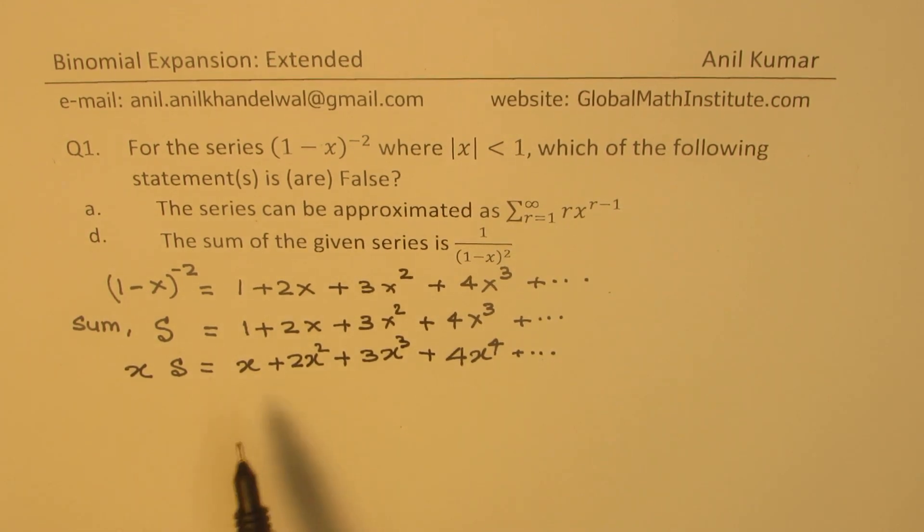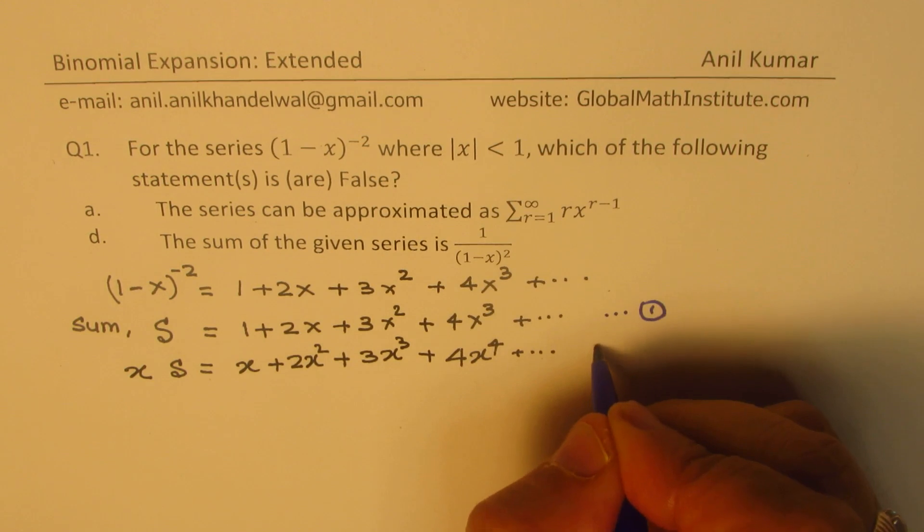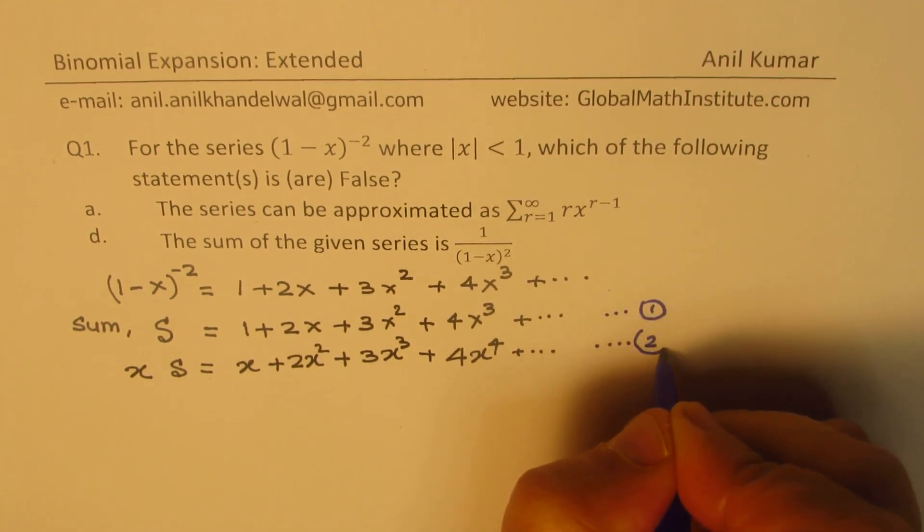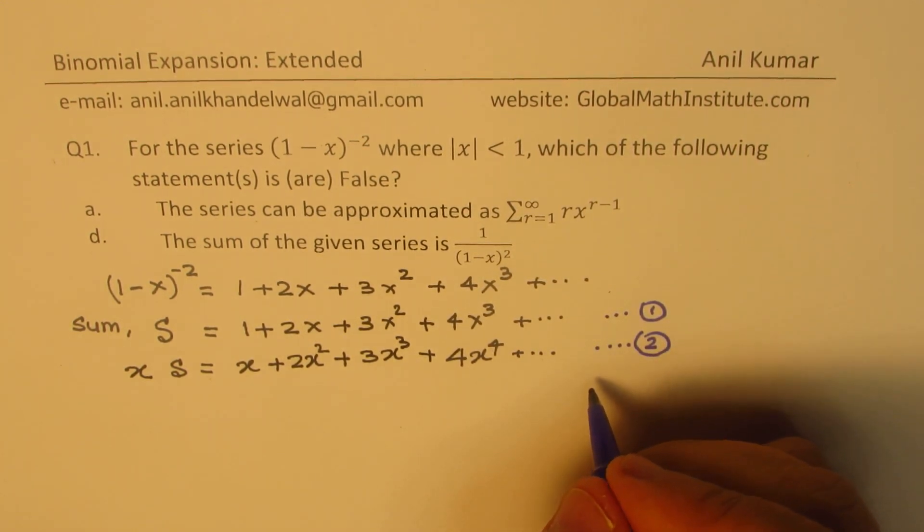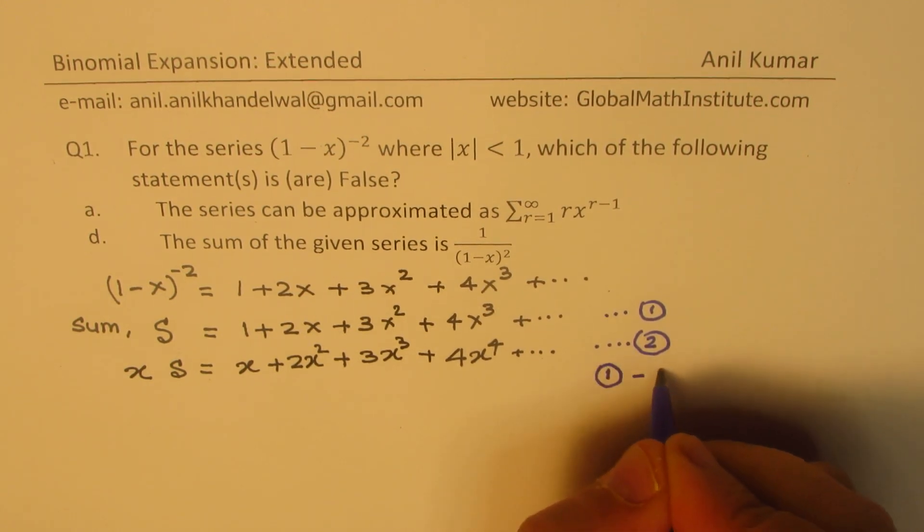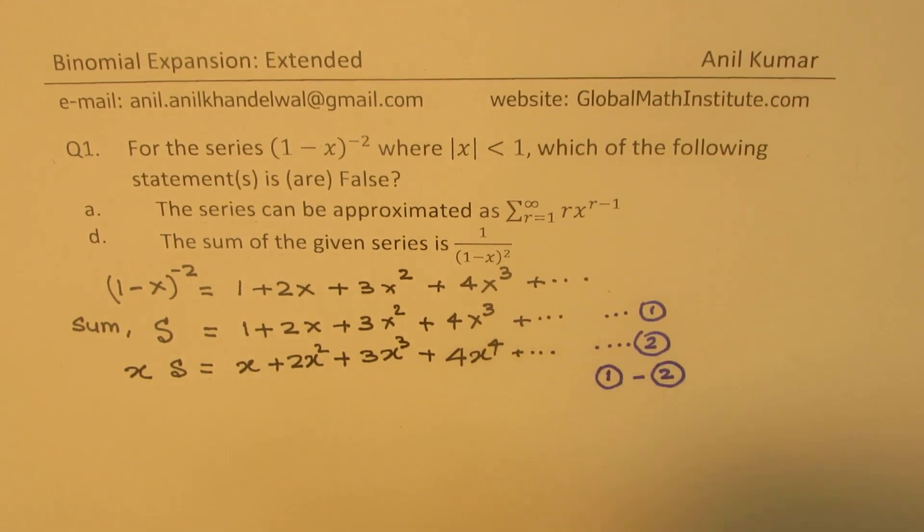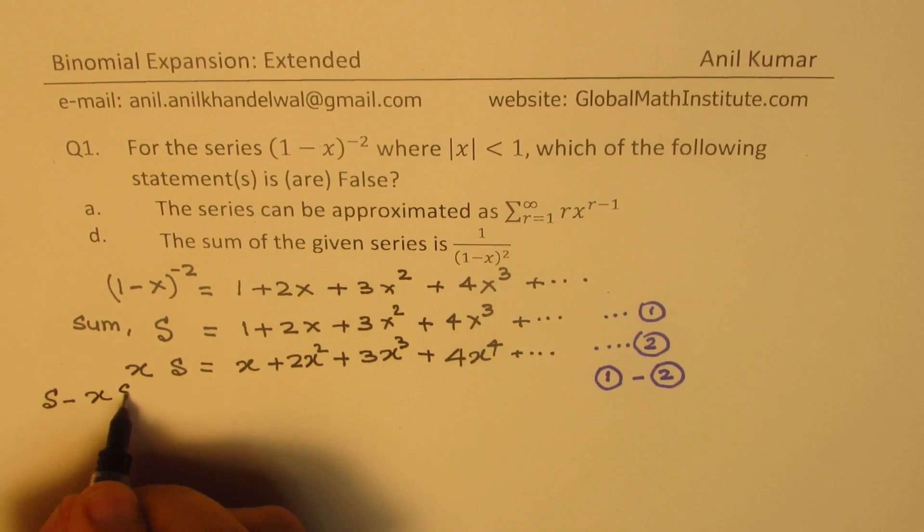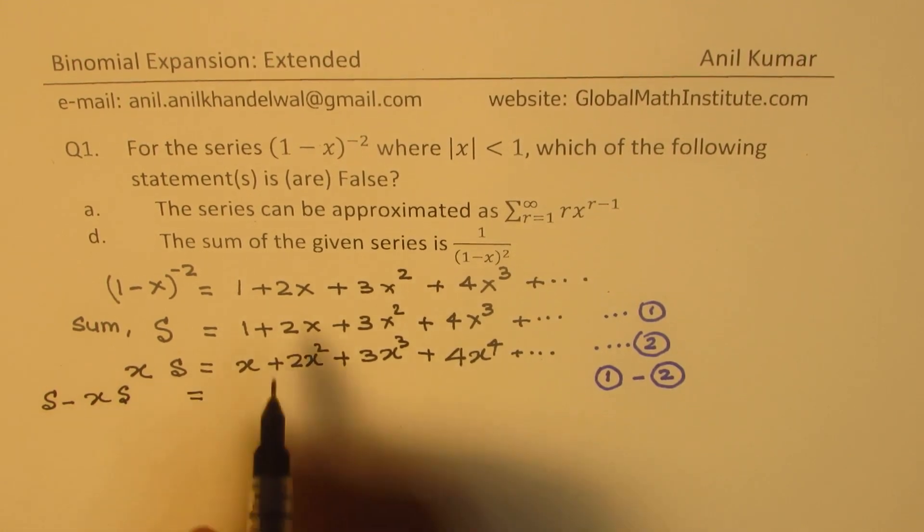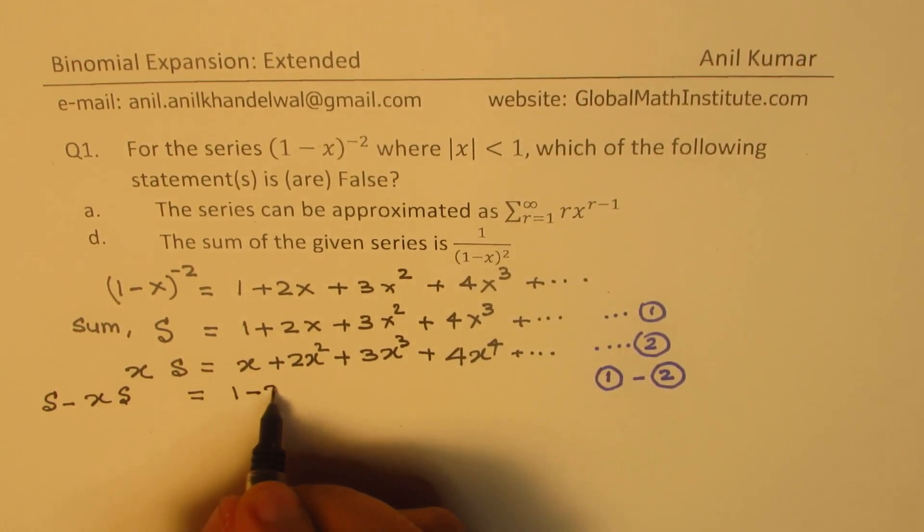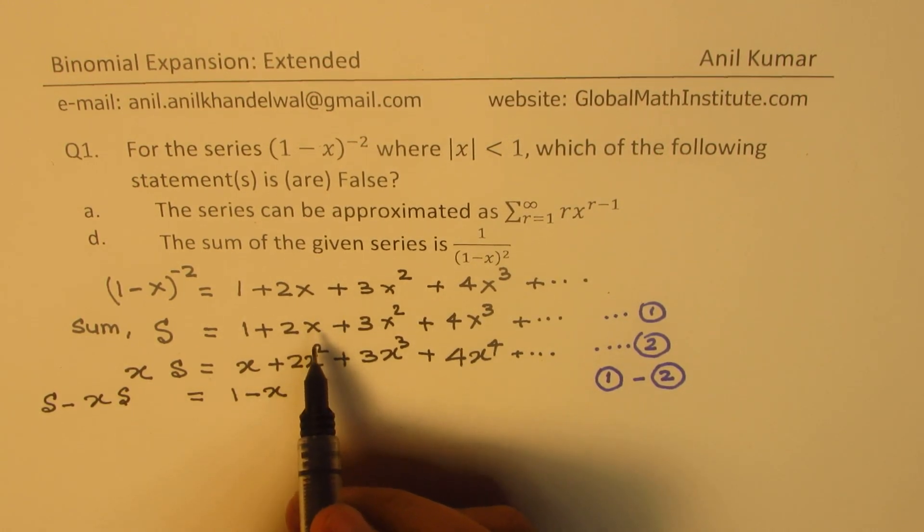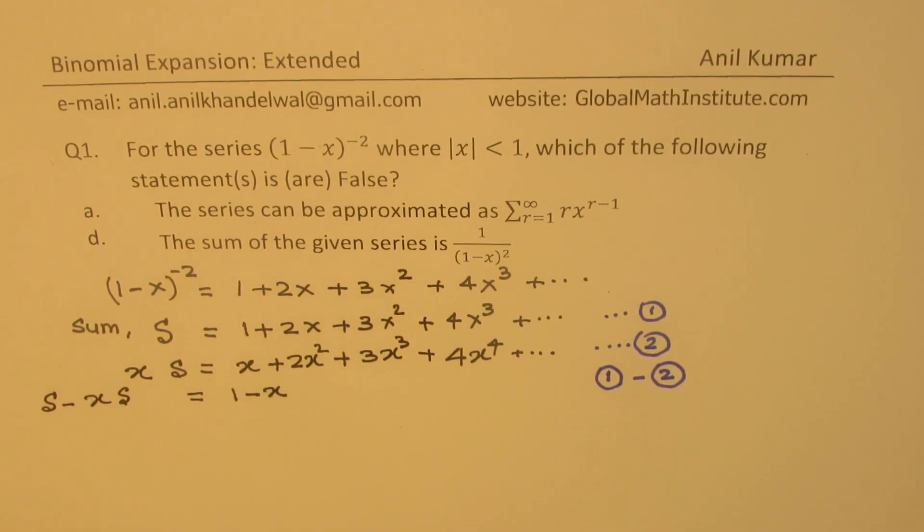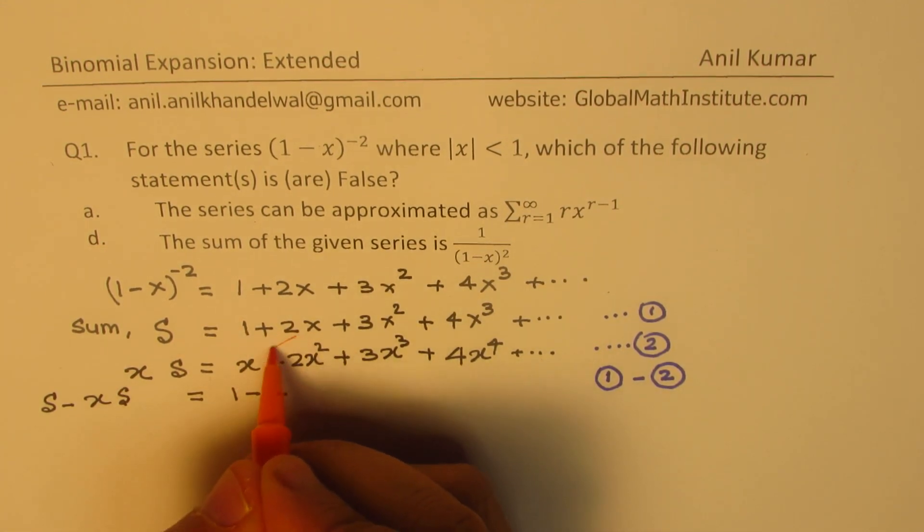Okay. Now, if I do S minus xS, let's say these are my two equations. This is my equation number 1, and this is my equation number 2. Now, if I do equation 1 minus equation 2, what do I get? I get S - xS equal to, so 1 minus nothing.